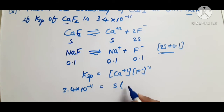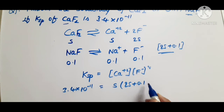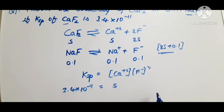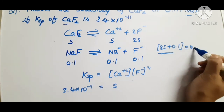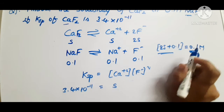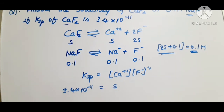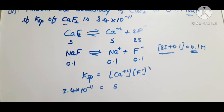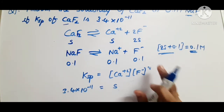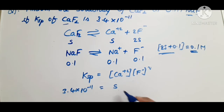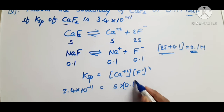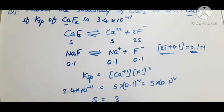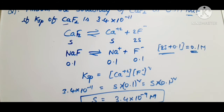The Ksp of CaF₂ is 3.4 × 10⁻¹¹, so Ksp = [Ca²⁺][F⁻]². Due to the common ion effect, dissociation of CaF₂ is suppressed, making 2S much smaller than 0.1 M, so [F⁻] ≈ 0.1 M. Therefore: 3.4 × 10⁻¹¹ = S × (0.1)², giving S = 3.4 × 10⁻⁹ mol/L. This is the solubility of CaF₂ in 0.1 M NaF.